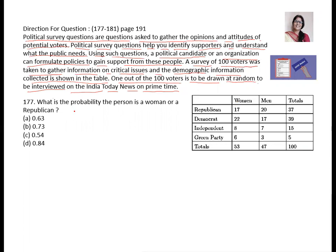Your question starts now. The first question is: what is the probability the person is a woman or a Republican? Now let us analyze the table. Republican women: 17, Republican men: 20, total Republican: 37.